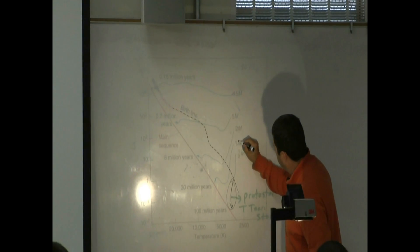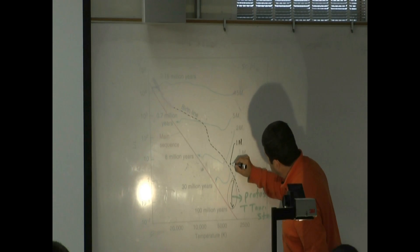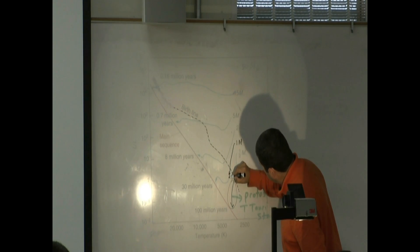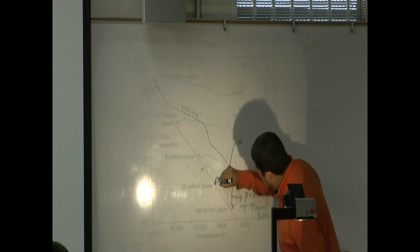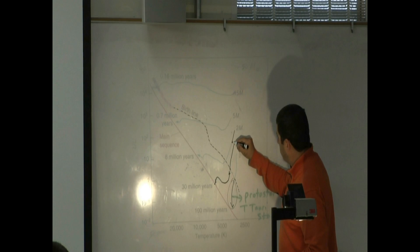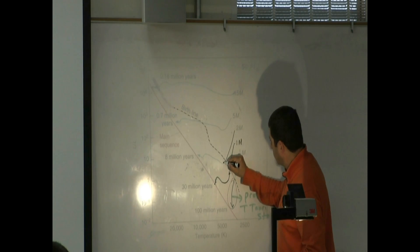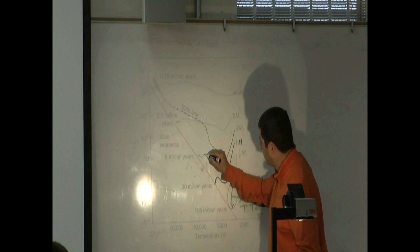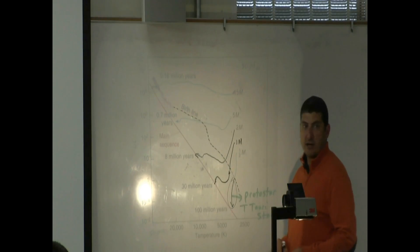See, this is one solar mass. Collapses, passes the birth line, collapses, gets hotter, and then finally relaxes on the main sequence. Two times the mass of the sun. Collapses, crosses the birth line. Gets hotter, bigger, and ends up over there on the main sequence.